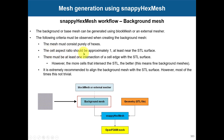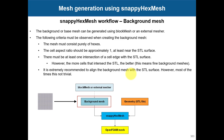The cell aspect ratio should be approximately equal to one, at least near the STL surface. There must be at least one intersection of a cell edge with the STL surface - but the more cells that intersect the STL, the better the final mesh. This means a finer background mesh is better. It is also extremely recommended to align the background mesh with the STL surface, though this is not always trivial.